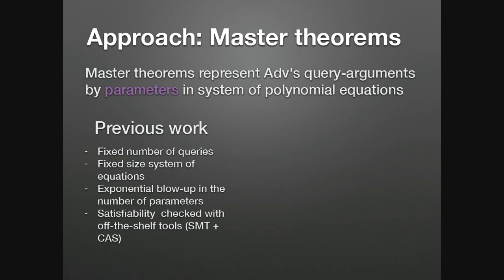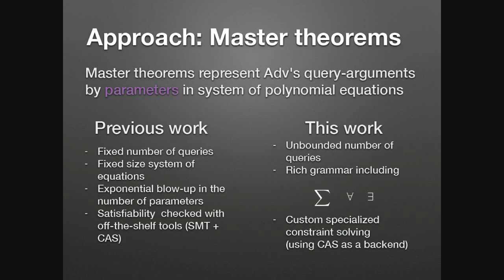Comparing previous work with our work: in previous work, the number of queries was fixed, giving a fixed-size system of equations but with exponential blow-up in its size. That system could be analyzed using SAT solvers and computer algebra systems. With our approach, we want to reach unbounded security, and for this we use a grammar that includes big ops like summations, for-all quantification, and existential quantification. To handle this, we define our own rules to simplify the system.